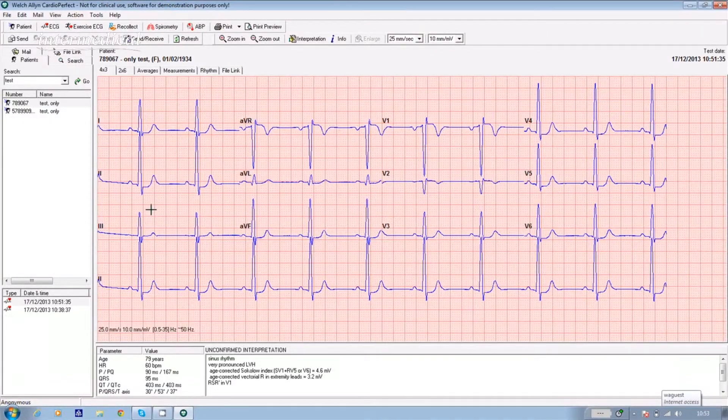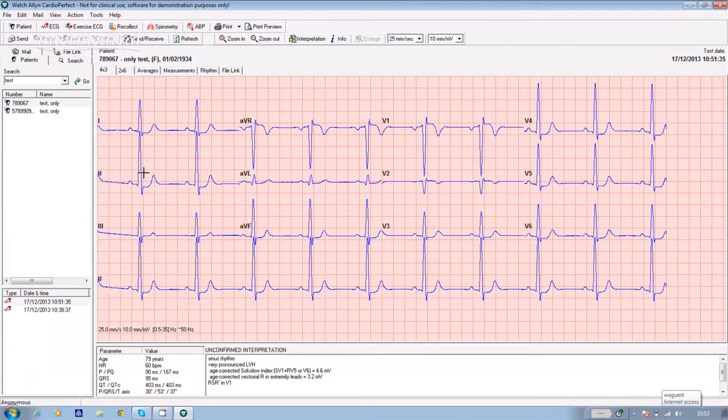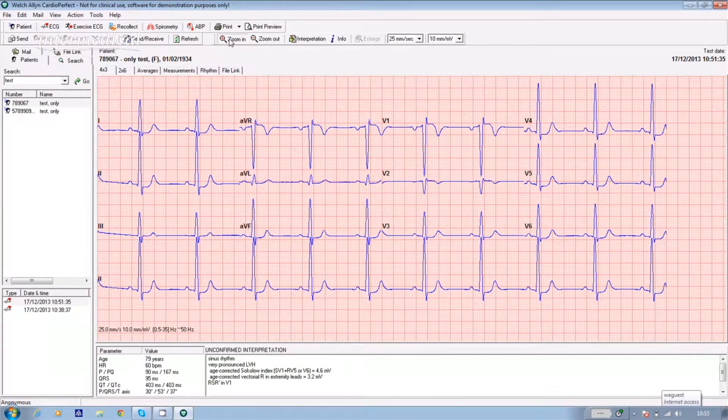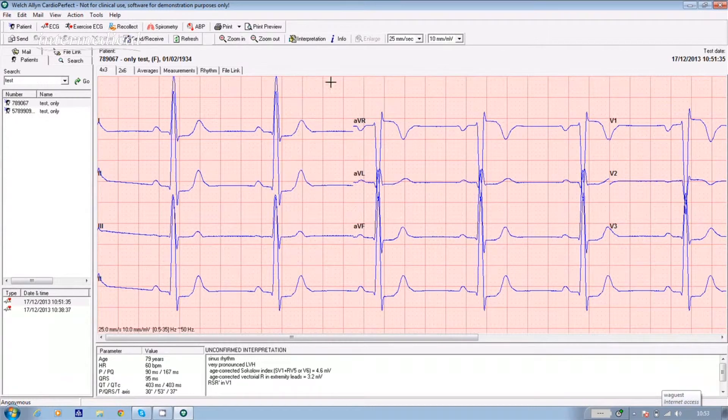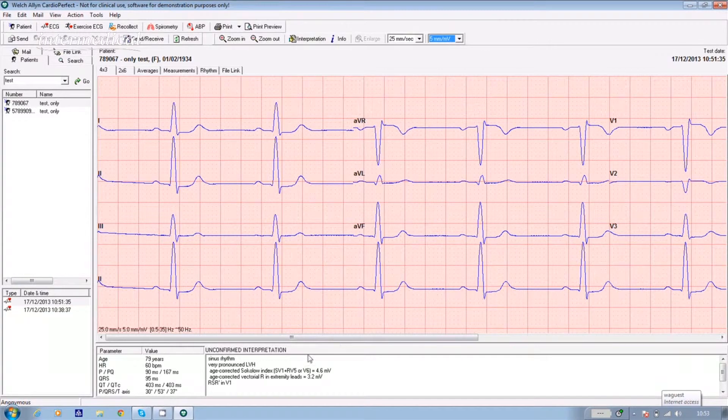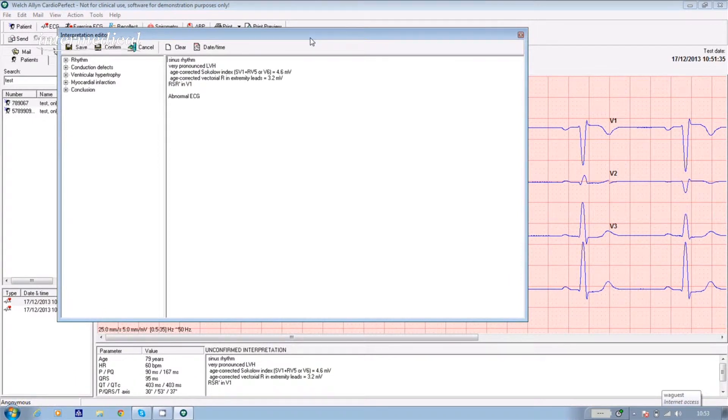If you'd like to look at the ECG in more detail, you can zoom into the test. You can alter the height of the waveforms or edit the interpretation by clicking on the interpretation icon at the top of the screen.